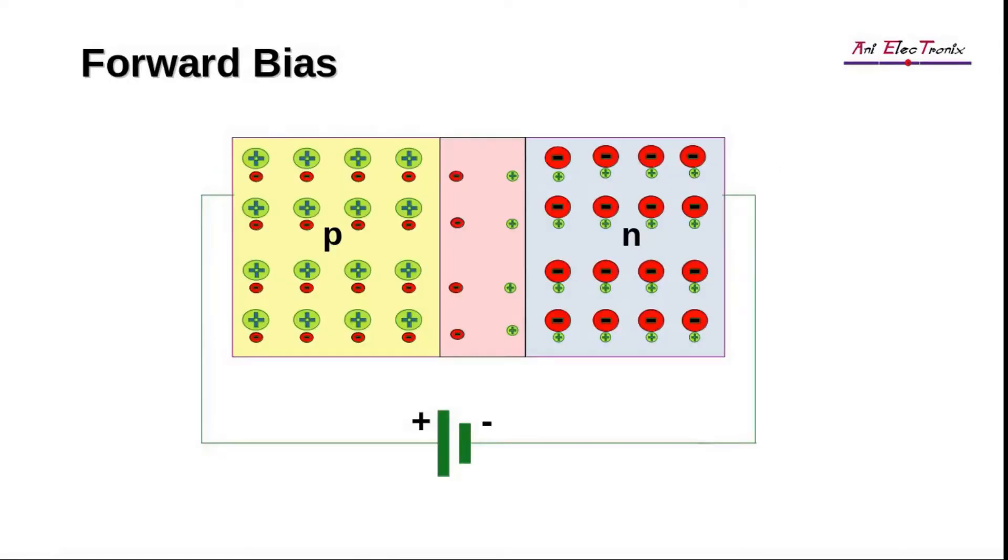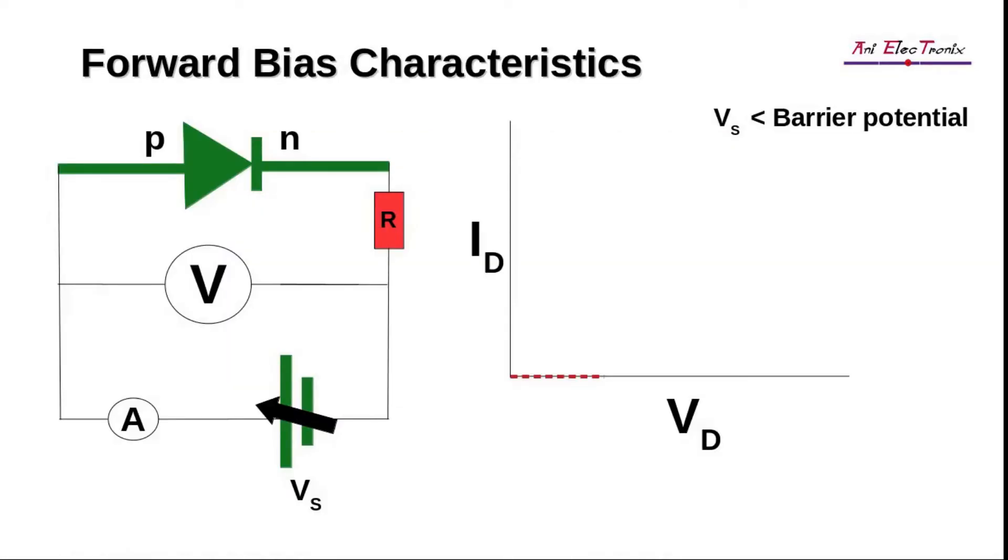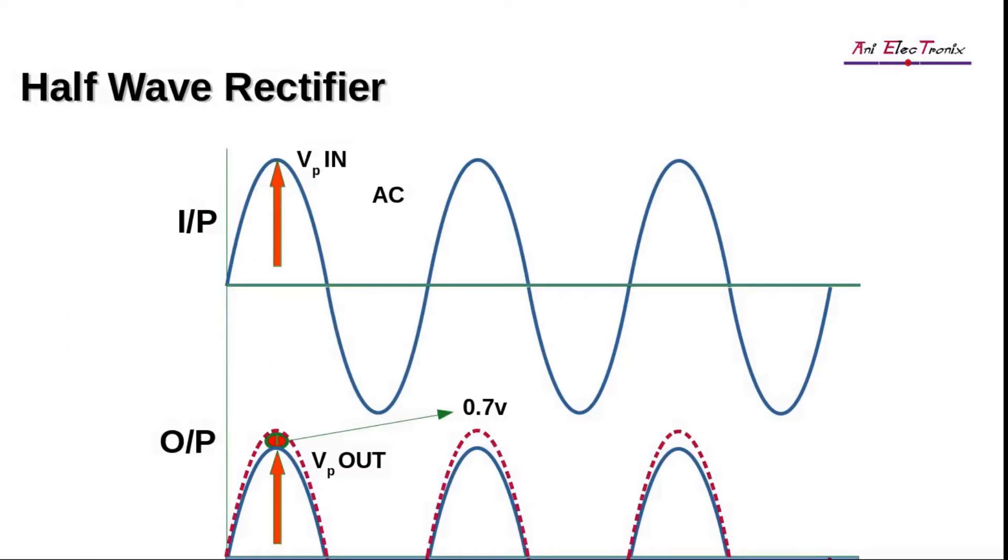In reality, however, we have to consider the barrier potential of the diode. When the source voltage crosses the barrier potential, the diode starts conducting. This means that a potential drop equal to the barrier potential will be included in the calculation. For silicon-made diodes, the barrier potential is approximately 0.7 volts. So VPout equals VPin minus 0.7 volts.